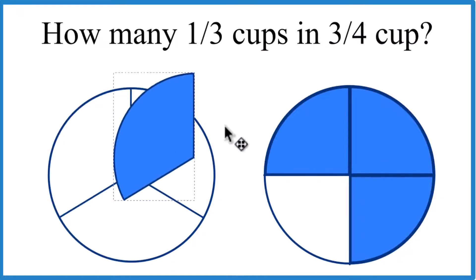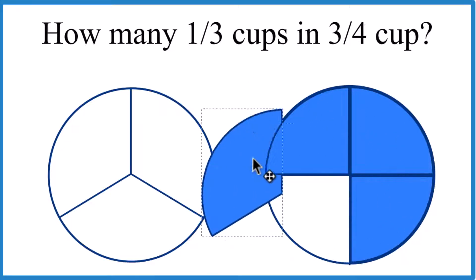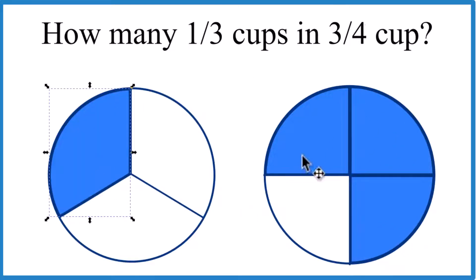We can see that maybe one or two, something like that, but it's a little bit hard to tell because the shapes are different. Let's do this mathematically.